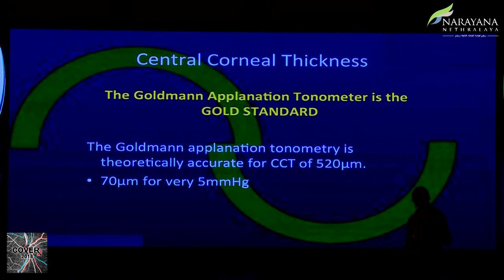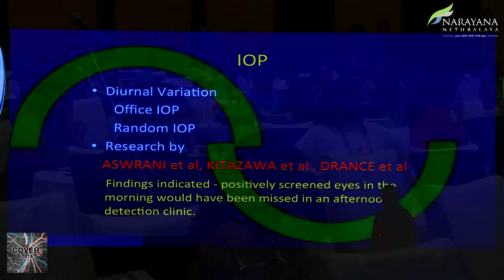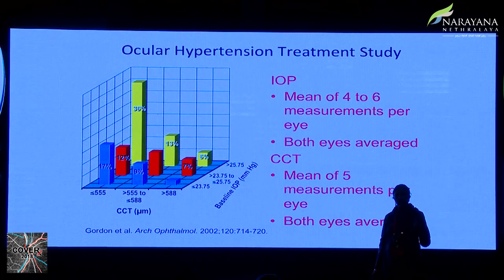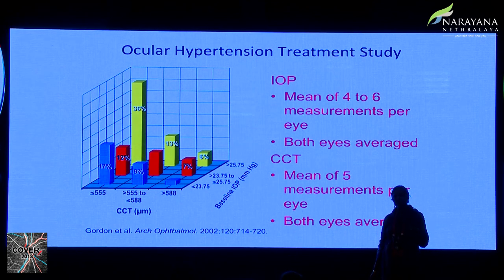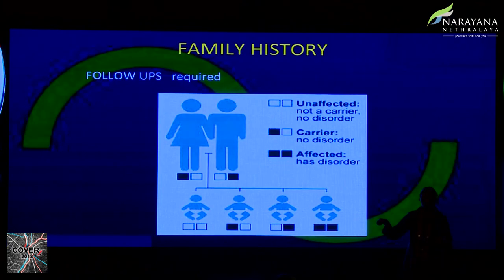There is no particular formula to correct IOP for CCT, but a 70-micron correction for every 5 mmHg is considered good. IOP has diurnal variations, so what we see is the office IOP. Asrani et al. concluded that positively screened eyes in the morning could have been missed in an afternoon clinic. The Ocular Hypertension Treatment Study advises taking the average of at least four to six IOP readings per eye, and CCT should be measured with at least five readings averaged for both eyes.